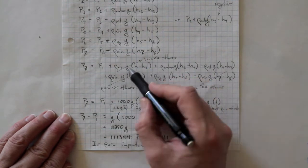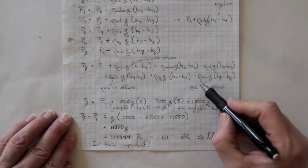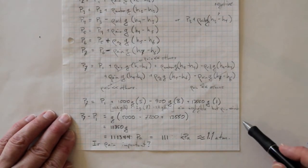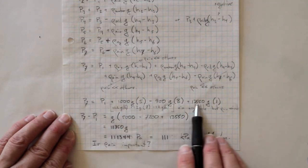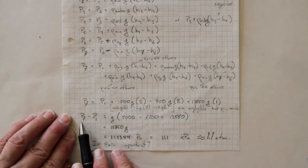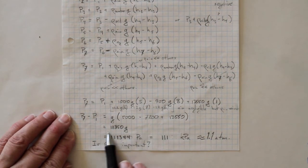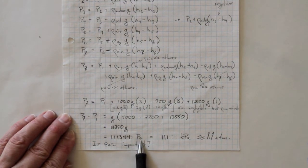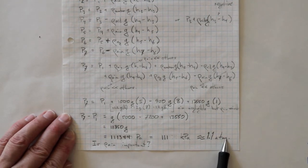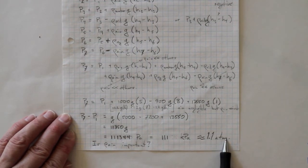For the moment, let's neglect the terms with air because the air density is much, much lower than all the other densities. If we plug all of that in with the three densities — water, oil, and mercury — and calculate through, we get 111,344 pascals in consistent units, or 111 kilopascals, or about 1.1 atmospheres. So p7 is 1.1 atmospheres greater than p1.